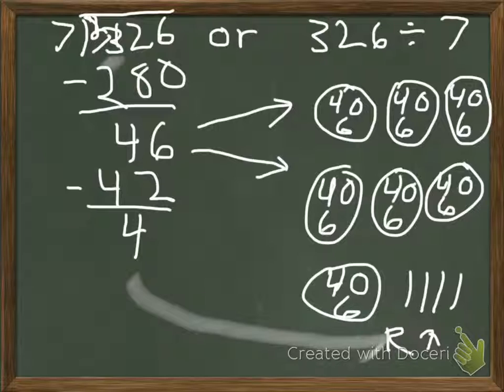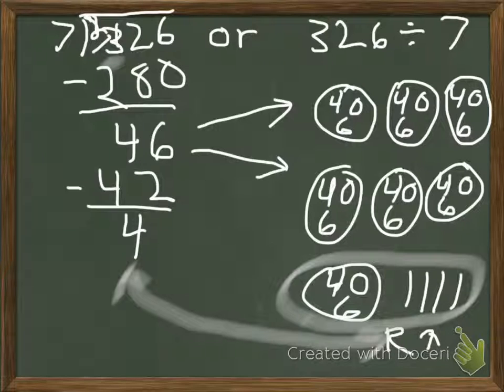Now I have my answer. And you can see that, yes, there is a remainder of 4. But to find the answer, all I need to do is look at one of the circles because that tells me what I'm going to have for one of those parts of 7. And if I add them up, I get 46 with a remainder of 4.